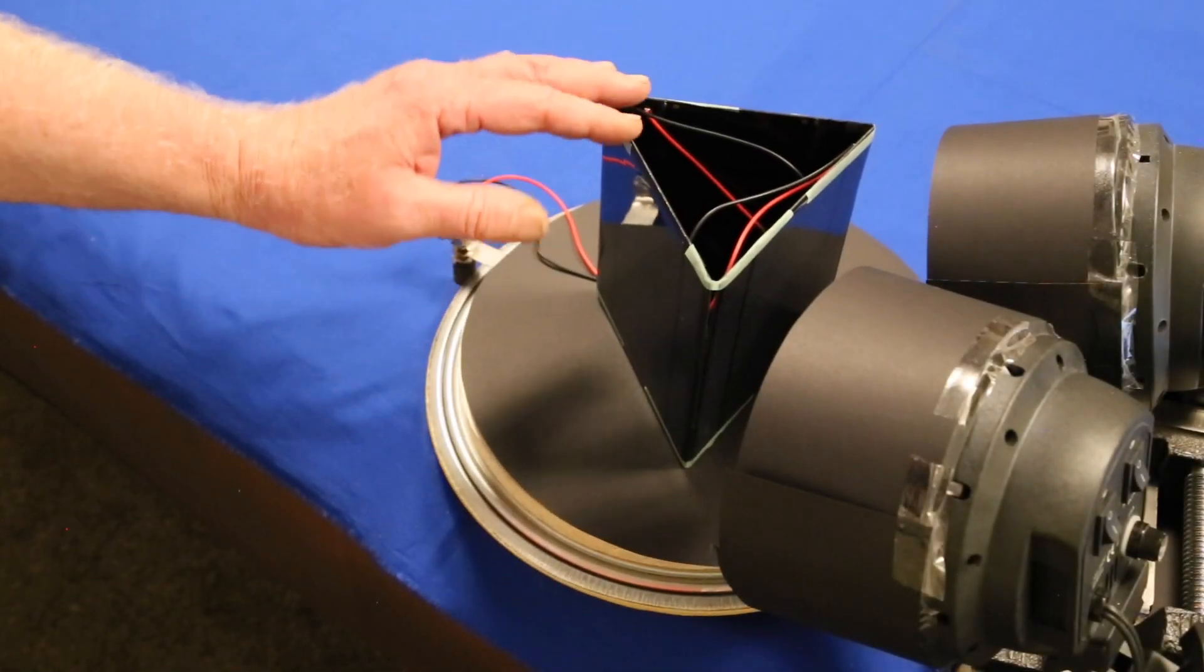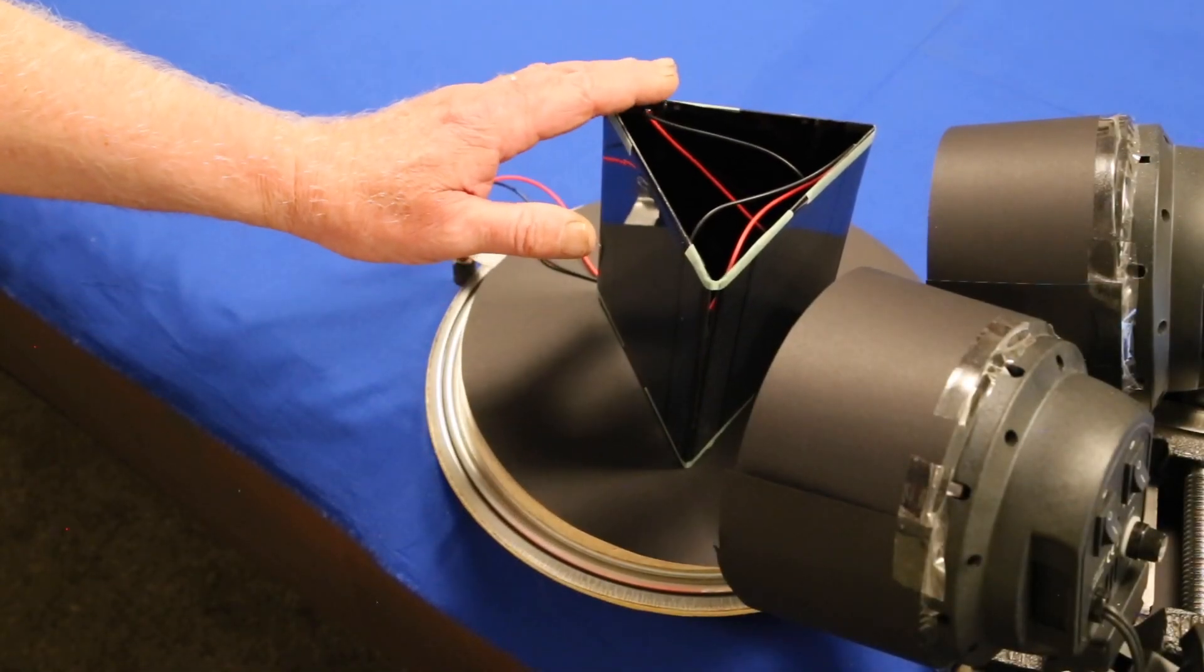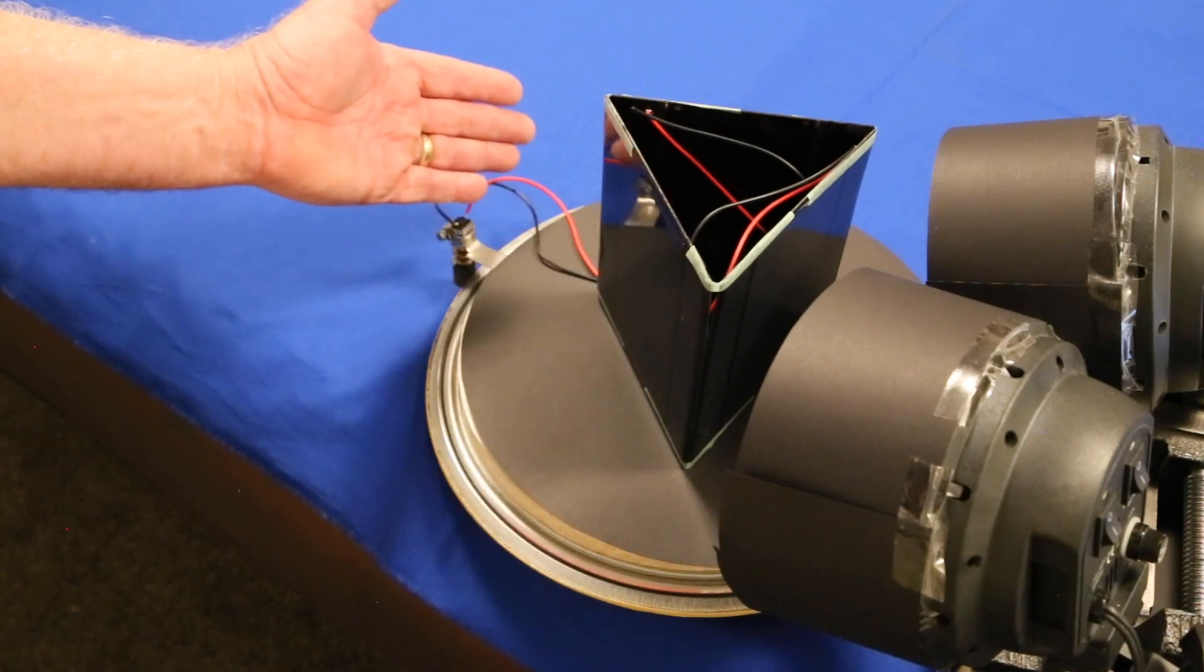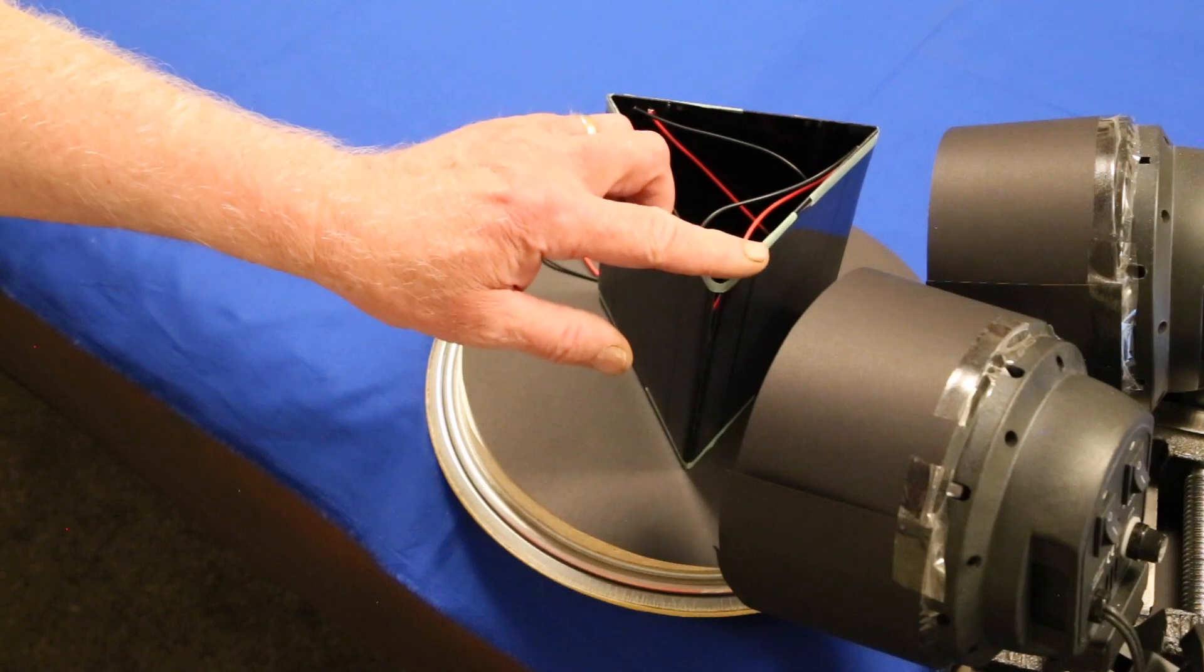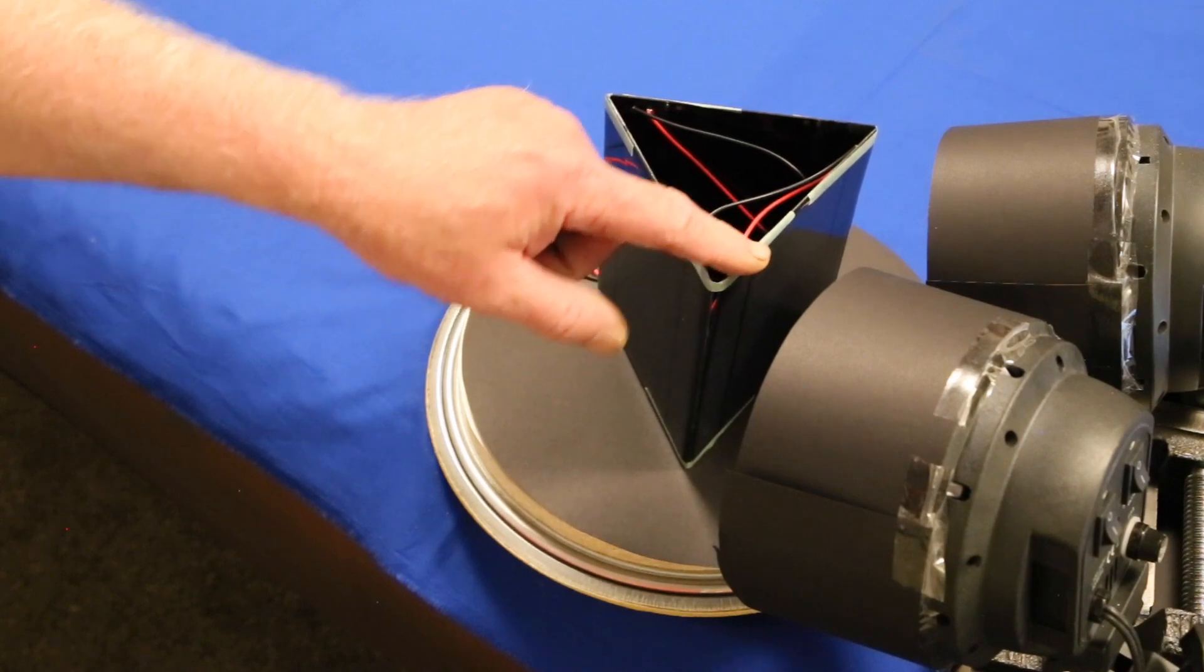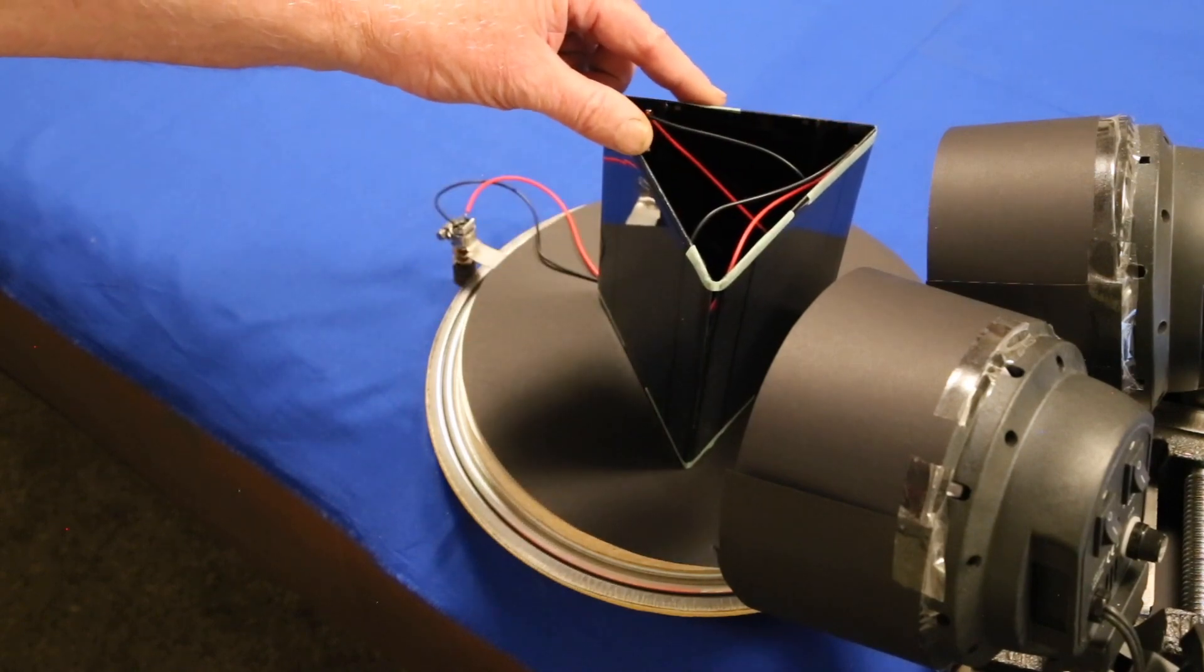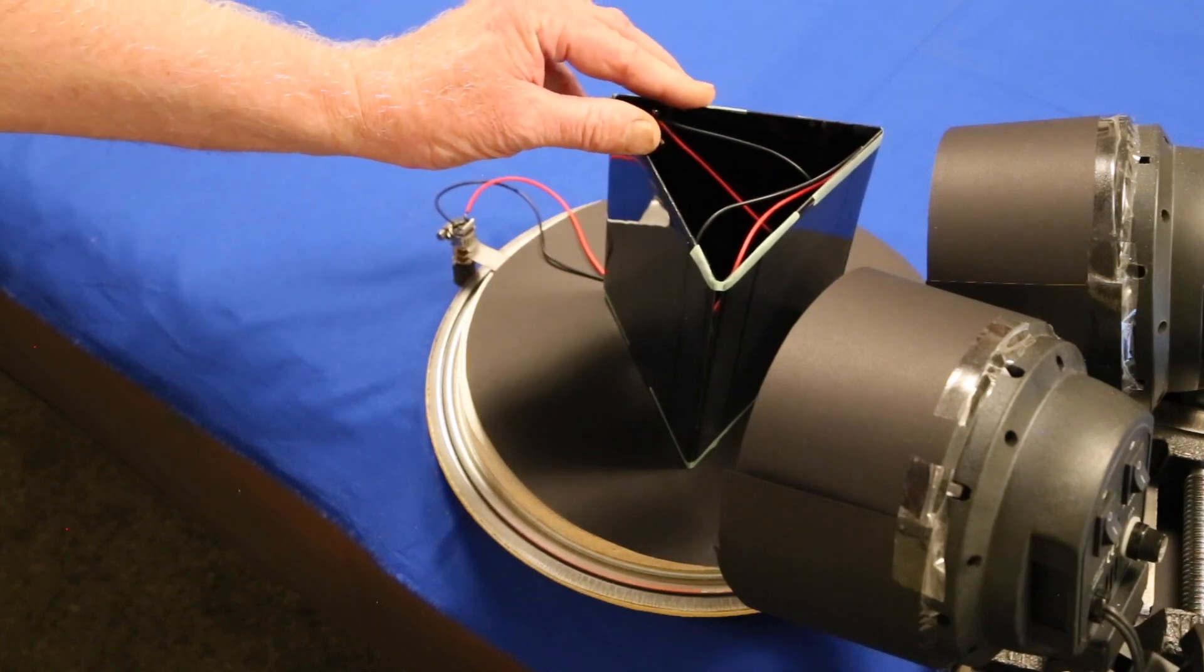Now all this is fine but it leaves us with a big problem. At the end of the day the Sun sets in the west and the tracker will be pointing west. When the Sun rises in the east the next day it's not going to illuminate these solar cells so the tracker is not going to work.